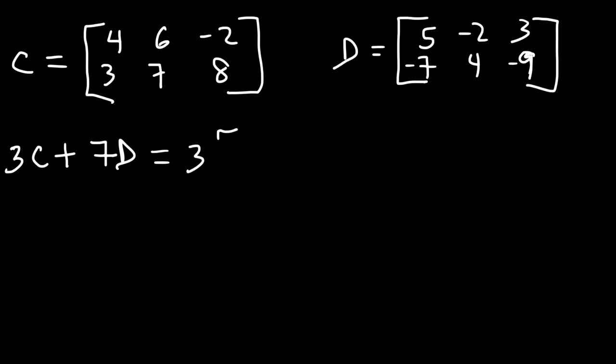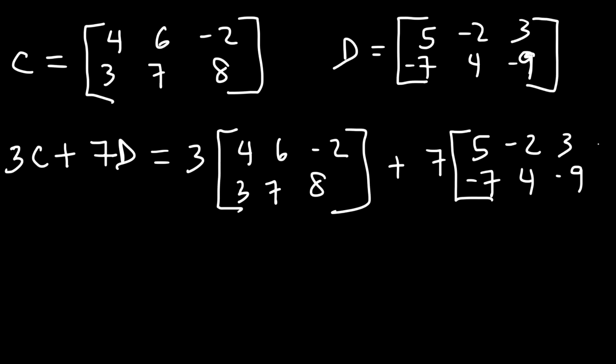So we have 3 times matrix C, and then plus 7 times matrix D. Feel free to pause the video if you want to work on this example. So let's multiply matrix C by 3. 3 times 4 is 12, 3 times 6 is 18. And then 3 times negative 2, that's negative 6. And then we're going to have 9, 21, and 24.